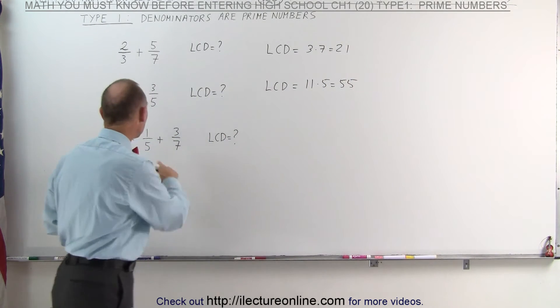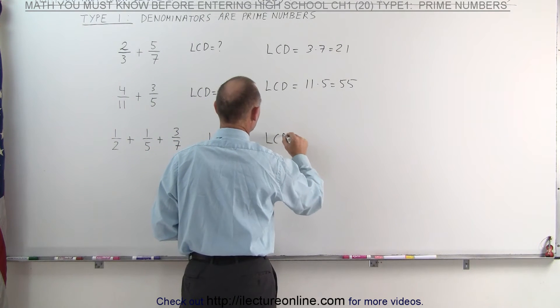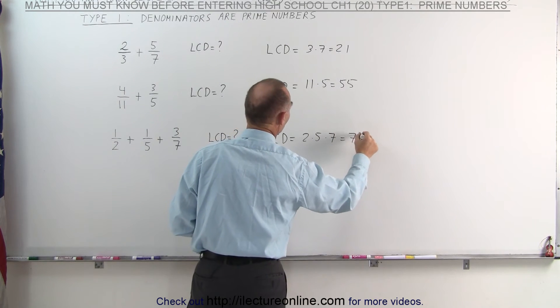And even when there's more than two fractions, the technique is still the same. We simply multiply the denominators together. And so this would be 2 times 5 times 7, which is 70.